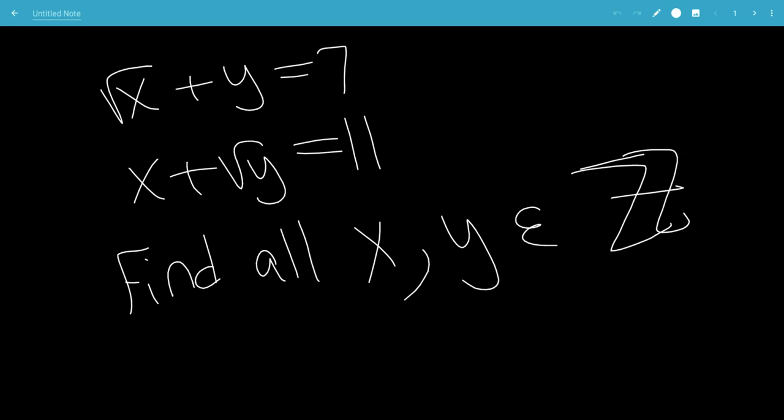In this video, we're going to solve this set of equations. We have square root of x plus y equals 7, and x plus square root of y equals 11. We have to find all integers x and y to satisfy this.